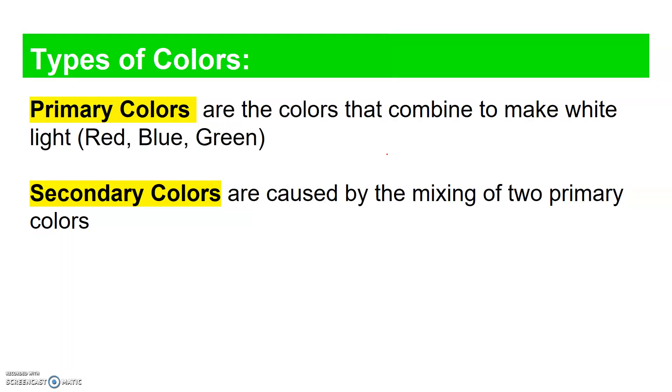There are two types of colors. There are primary colors that combine to make white light. In fact, if you take all the colors of the world and combine them, you'll get white light. But there are three primary colors you can use to make white light on its own. And those colors are red, blue, and green.